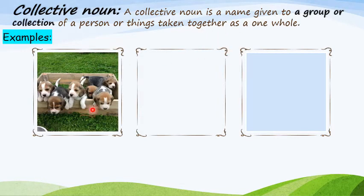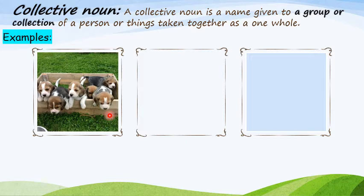What do you see in the picture here? Babies of a dog. Yes, what do we call them? Puppies. So we can see one group of puppies. In collective noun, we call it a litter. A litter of puppies means a group of puppies.